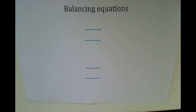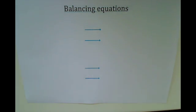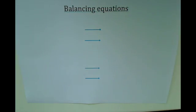This video is about balancing equations. It's really important to balance equations when we write symbol equations because we need to show that in a chemical reaction no atoms are lost or gained. You need exactly the same number of atoms on the left-hand side as you do on the right-hand side of the arrow.